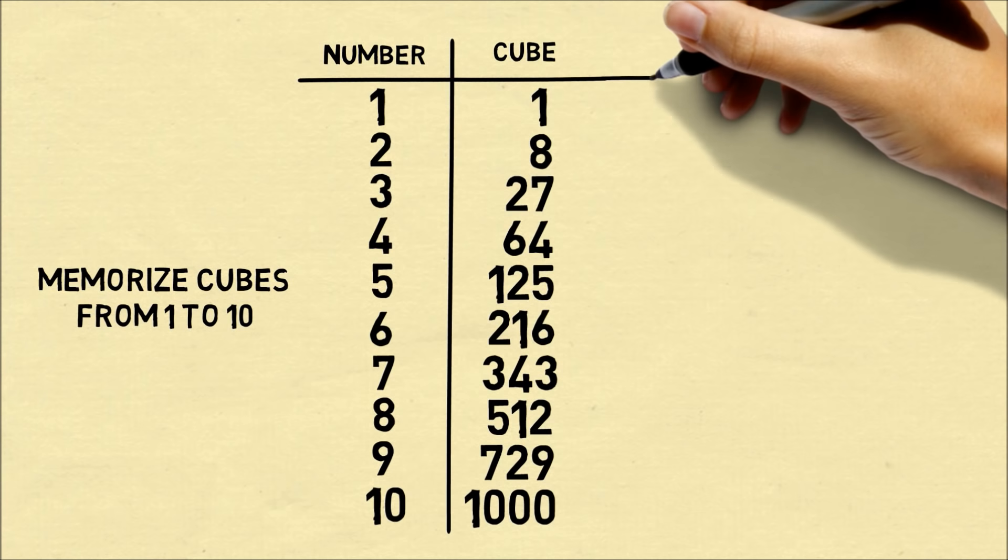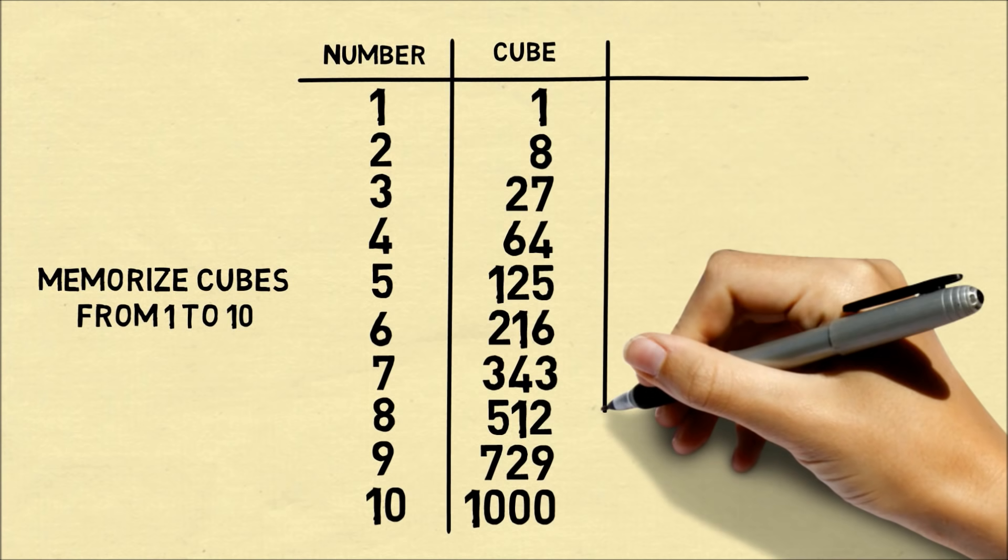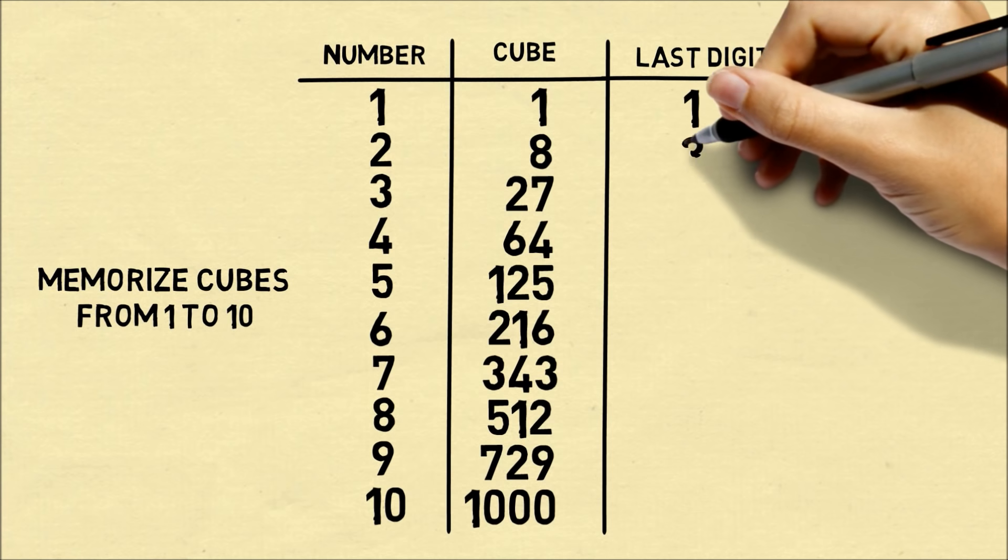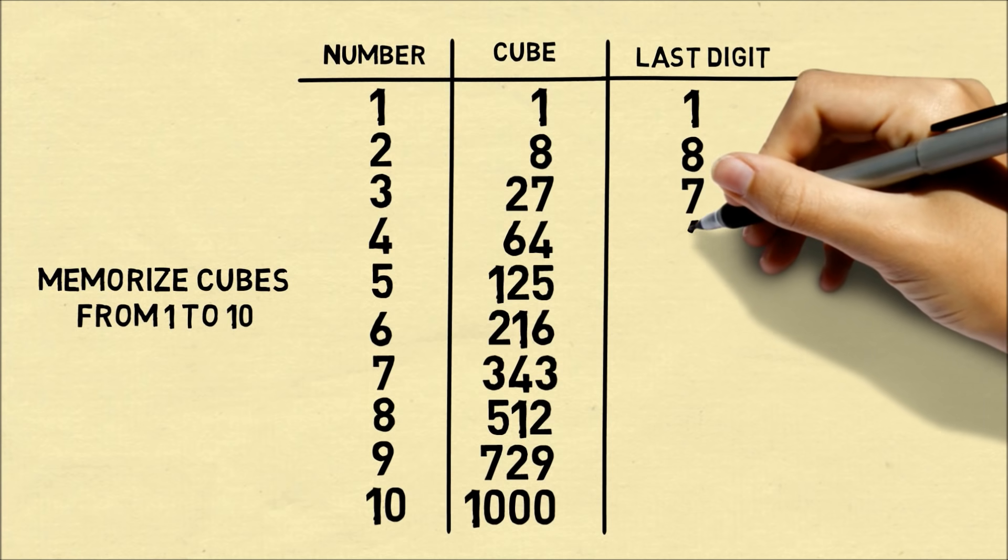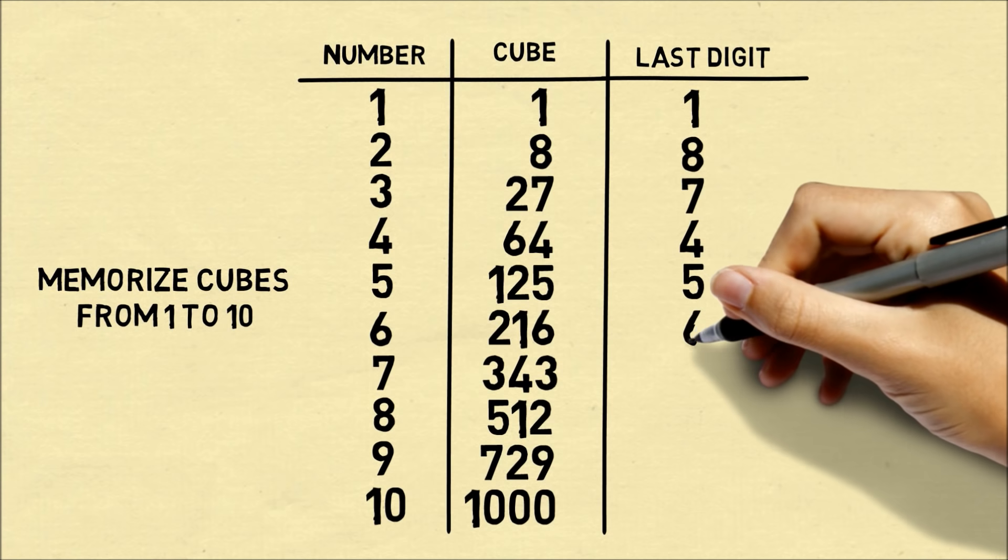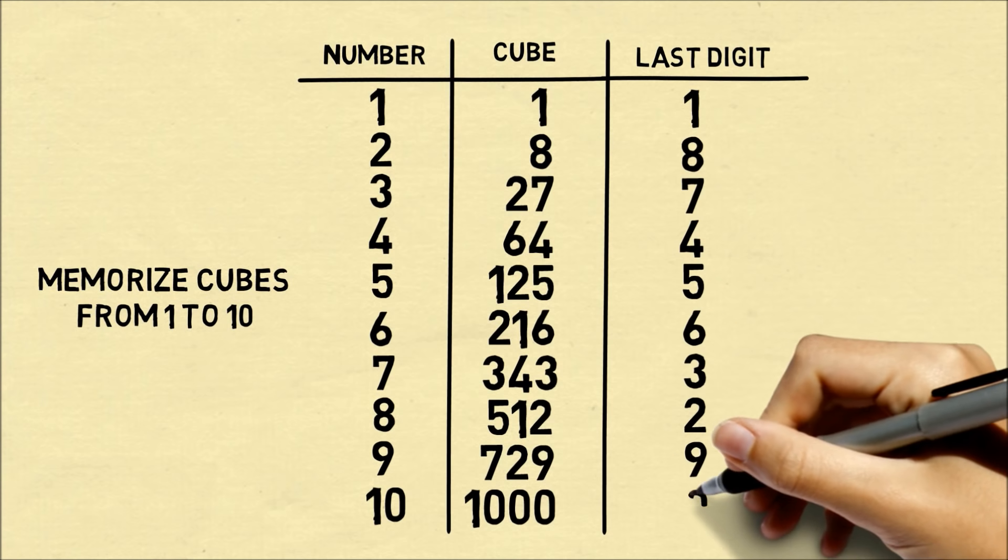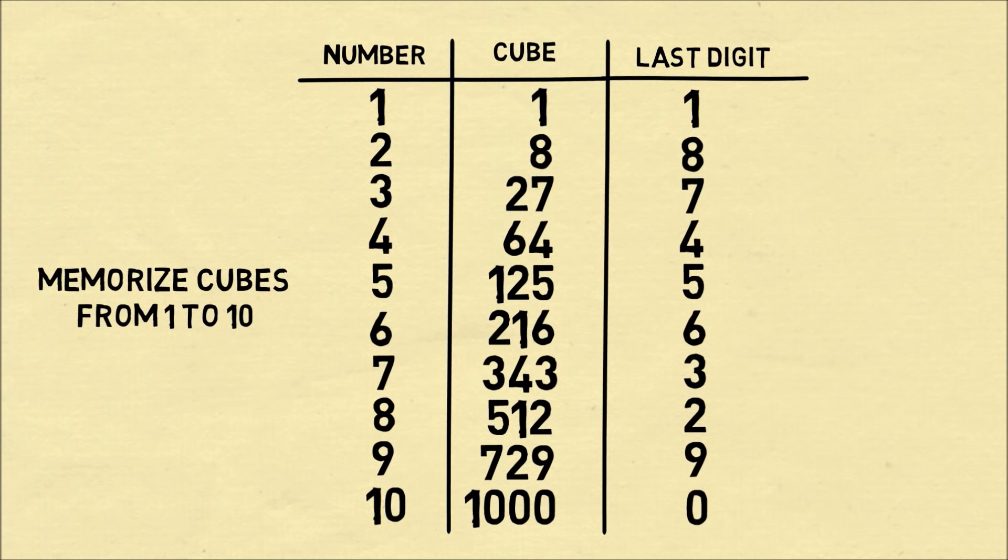Now once we've written down these cubes, I want you to focus on the very last digit of the cube. What's important is that each of these 10 numbers end in a different last digit. That'll be very important to doing this trick. This will be another thing you have to memorize.